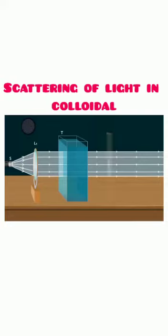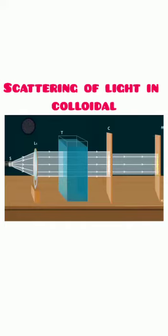Allow the beam of light to pass through a circular hole C made in a cardboard. Obtain a sharp image of the circular hole on a screen MN using a second converging lens L2 as shown here.